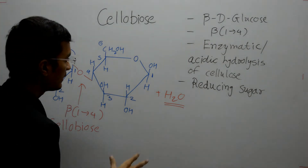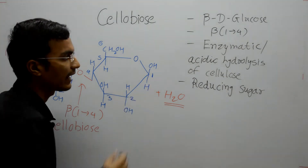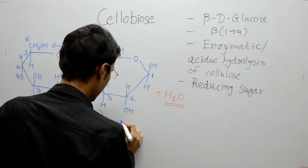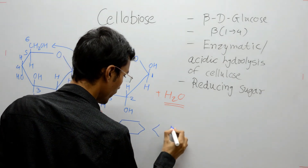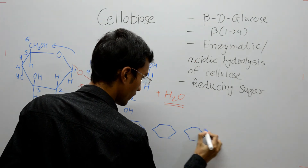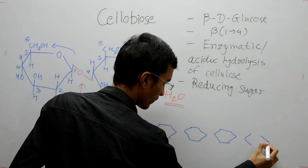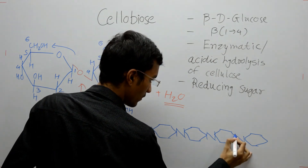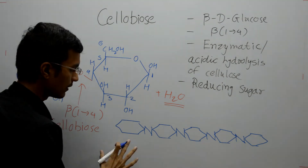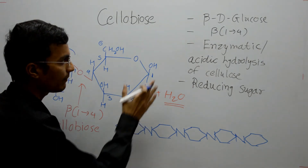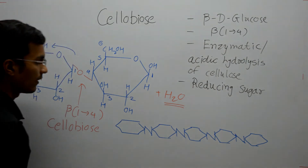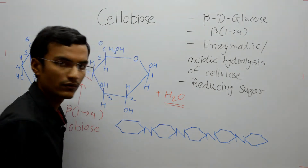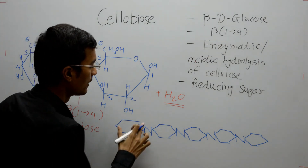Cellobiose is formed by enzymatic hydrolysis or acidic hydrolysis of cellulose. Let's see how it forms. Suppose this is the polysaccharide chain of cellulose. When this polysaccharide cellulose is hydrolyzed by enzyme or by acidic hydrolysis, the enzyme or acid is involved in breaking the beta-1,4 bonds. The cellulase enzyme randomly breaks these beta-1,4 bonds.